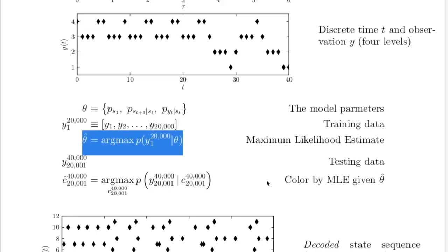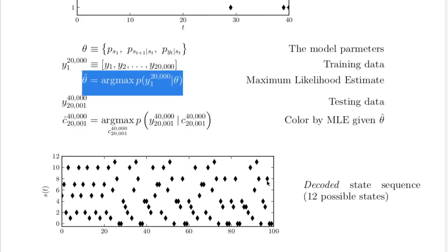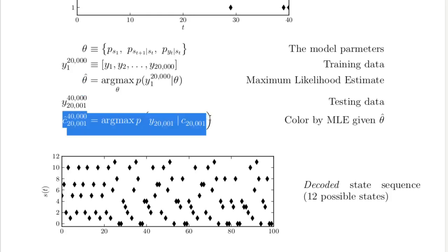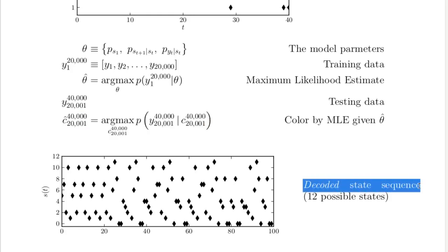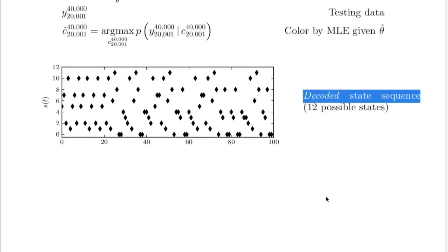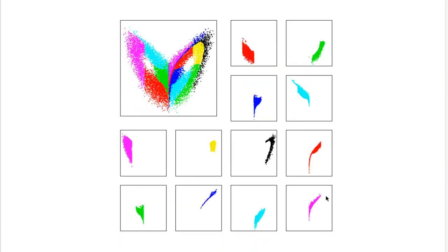I trained the model on the first half of the data. Next, I used the fitted model to estimate the state sequence that corresponds to observations from the second half of the data. I used the Viterbi algorithm, which I'll describe in a few minutes, to calculate that estimate. The estimate is sometimes called the decoded state sequence. Here's a plot of part of the decoded state sequence. Finally, I get this picture using the decoded state sequence to assign colors to dots in the original state space.